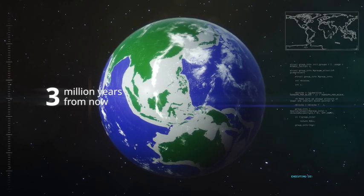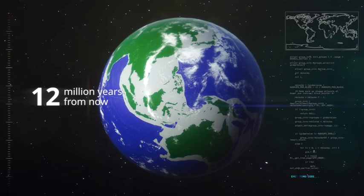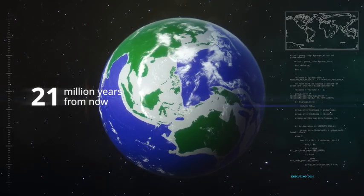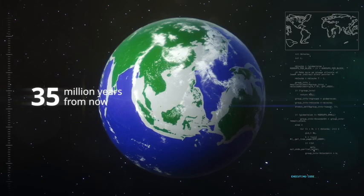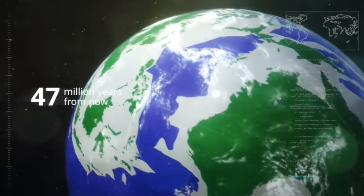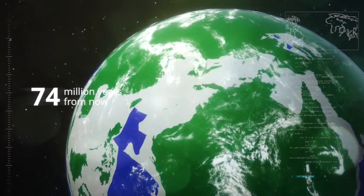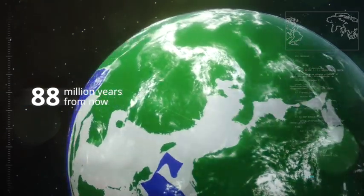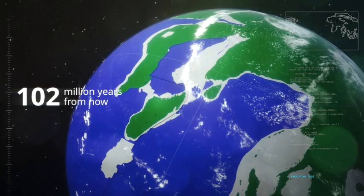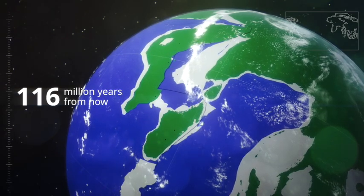Using data from present mountain belts, the Utrecht geologists have now deduced some rules of mountain building. Using these rules and a model of future continental movement, they can predict how subduction will transform the present-day geography into mountain belts in a future that lies immeasurably far away.